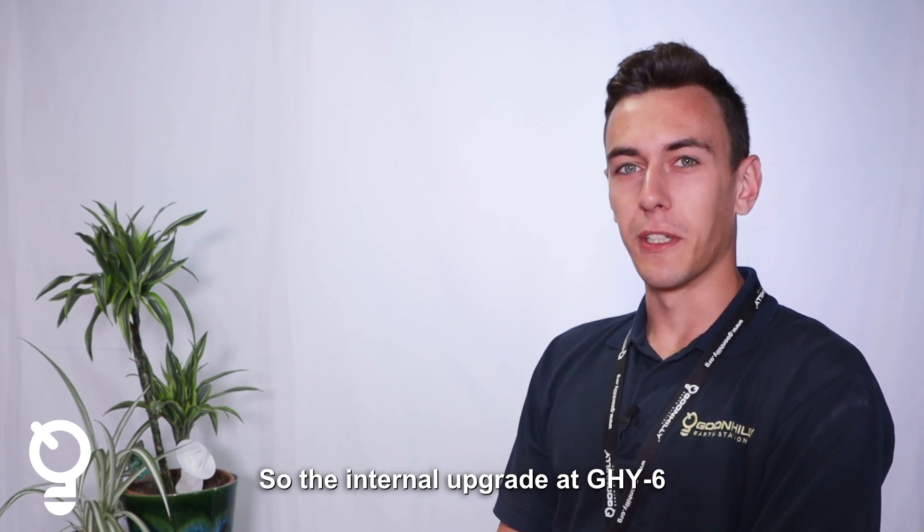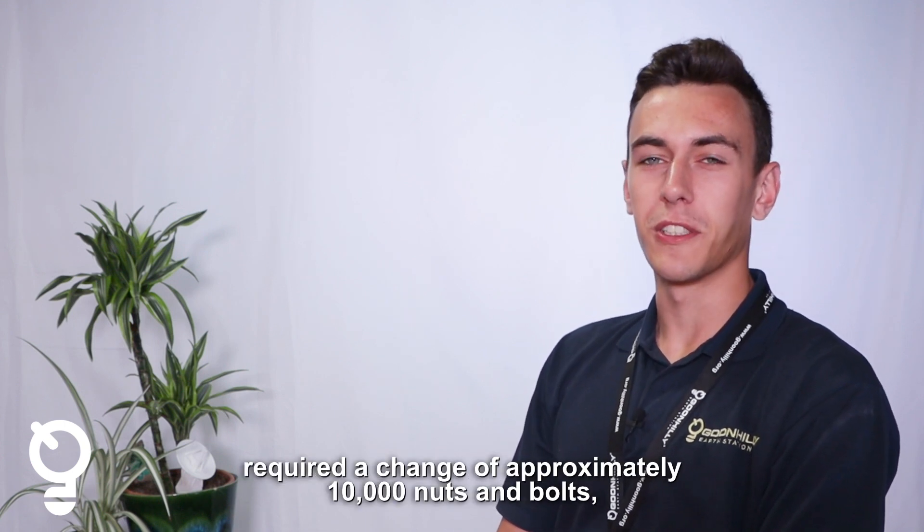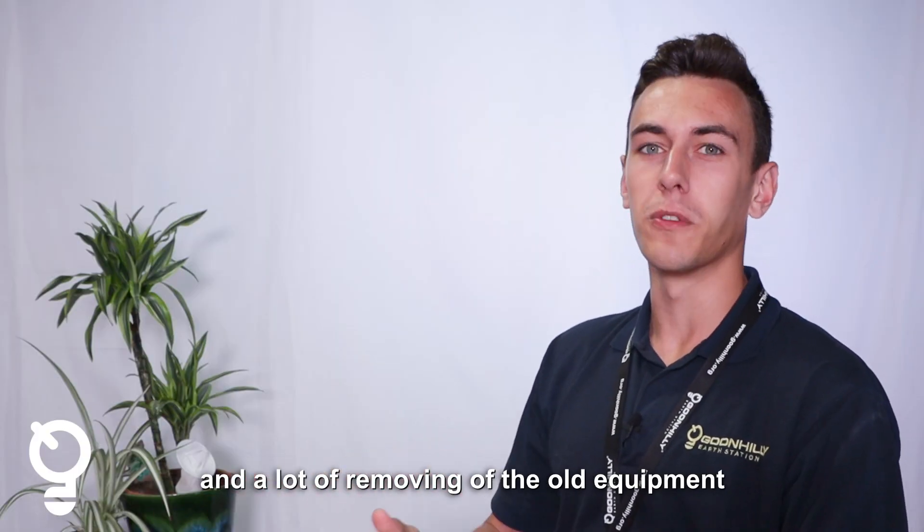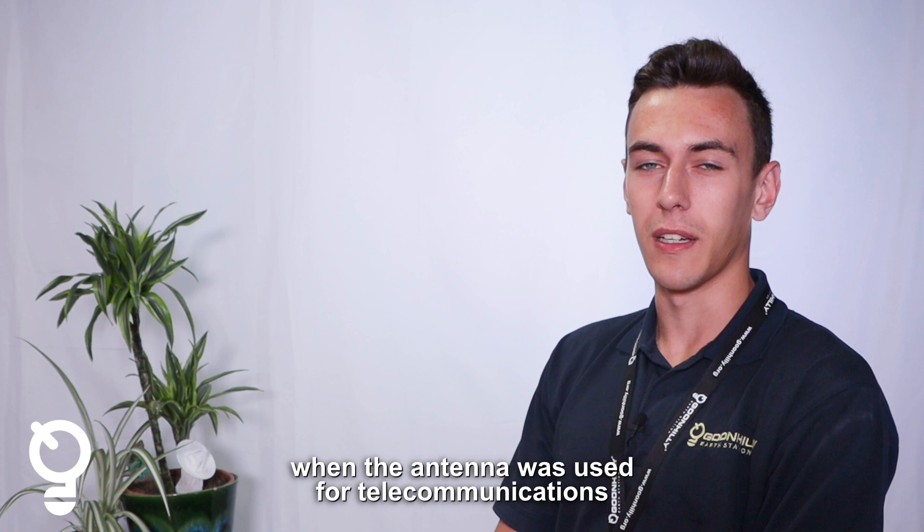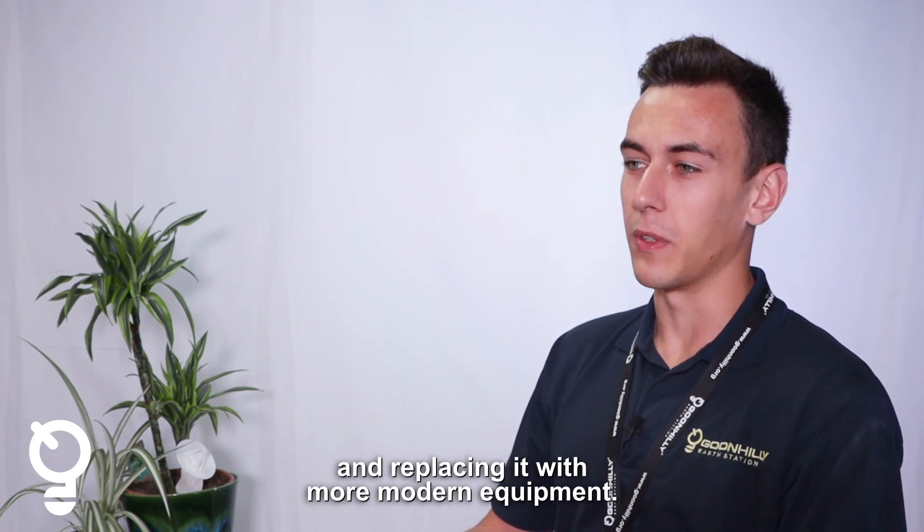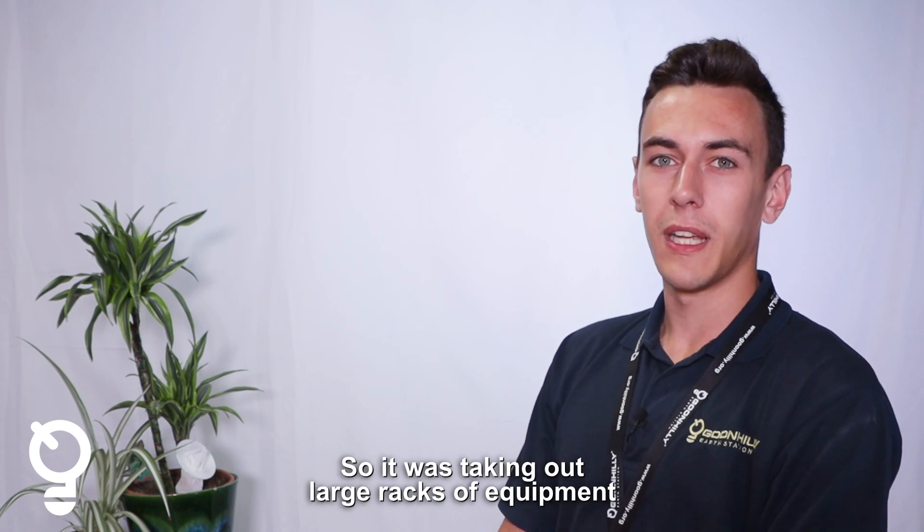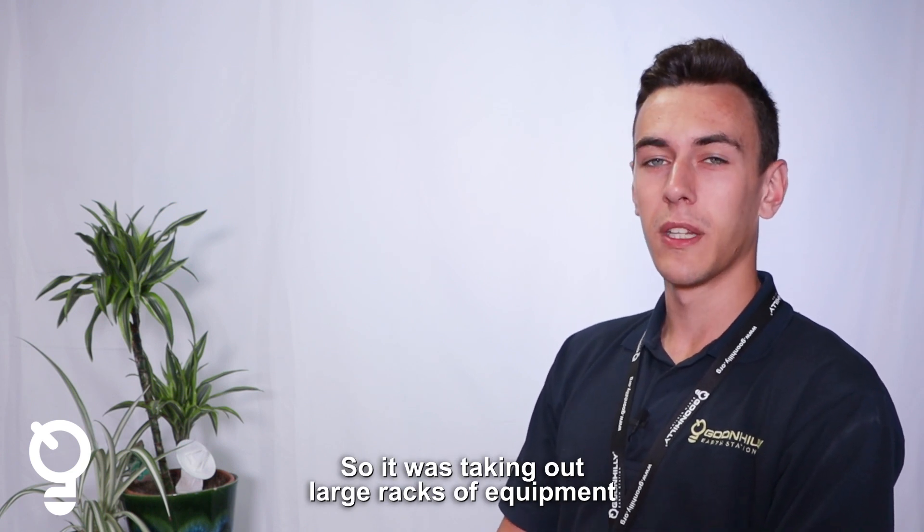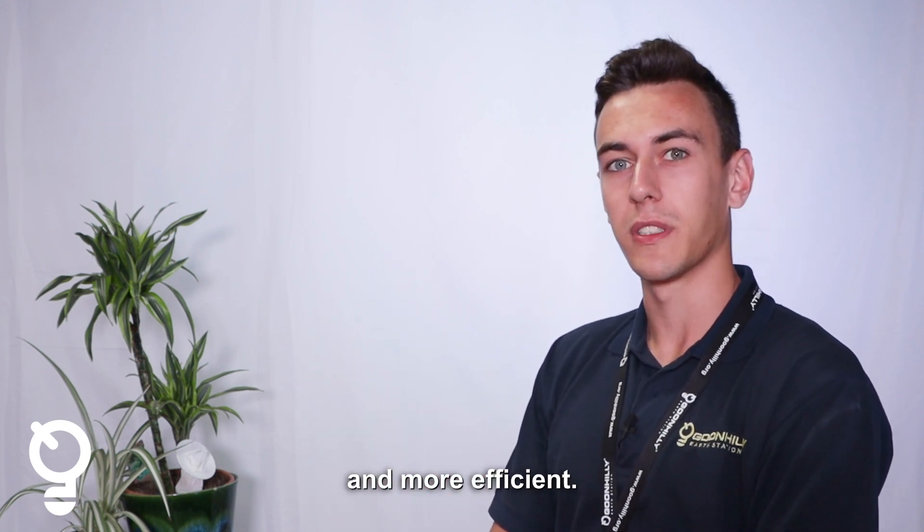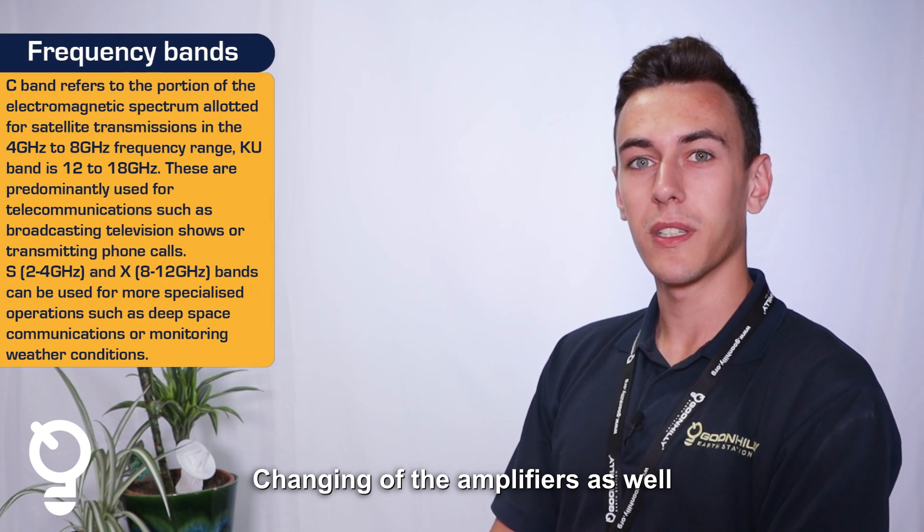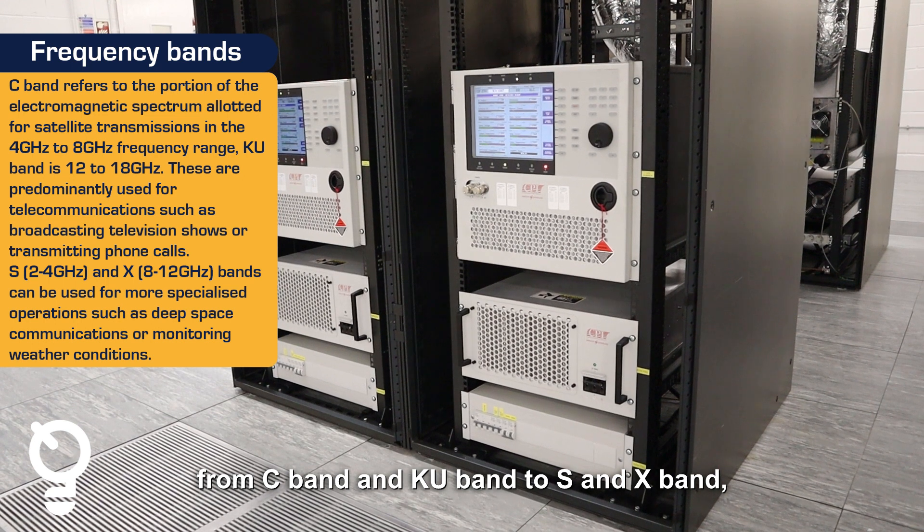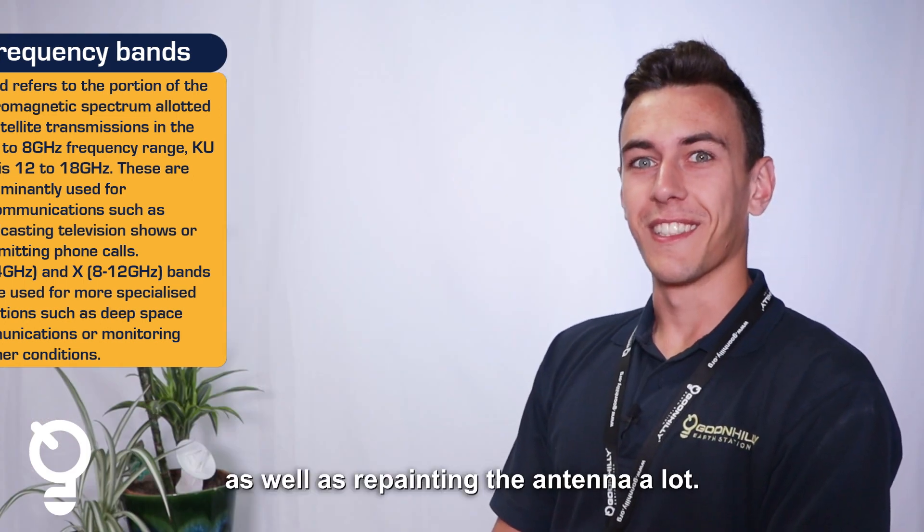The internal upgrade at Goonhilly 6 required a change of approximately 10,000 nuts and bolts and a lot of removing of the old equipment when the antenna was used for telecommunications, replacing it with more modern equipment. Large racks of equipment were replaced with a single unit, much smaller and more efficient. We also changed the amplifiers from C band and KU band to S and X band, as well as repainting the antenna.